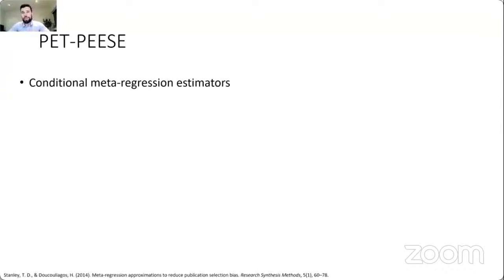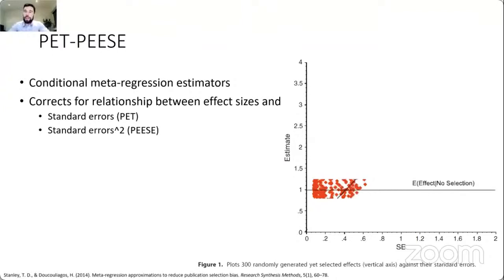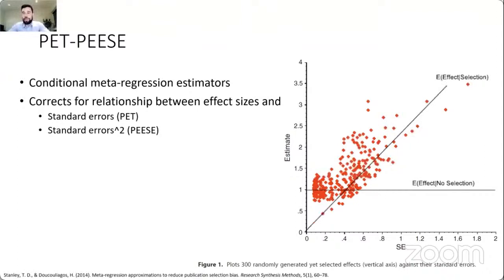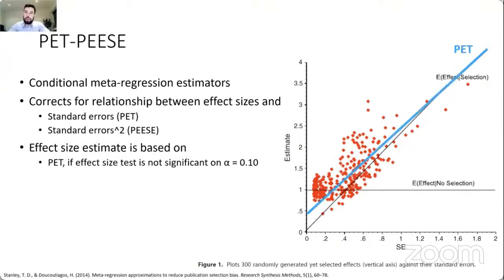PET-PEESE is a conditional meta-regression estimator that adjusts for the relationship between effect size and standard errors or standard error squared. The idea is that if there is no relationship between effect size and standard errors — which happens when there is no publication selection bias — then fitting a meta-regression, the intercept should correspond to the true effect size. However, if there is publication bias selection, you see a higher number of small studies with large standard errors that overestimate effect size, and fitting either the PET or PEESE model should provide a better estimate.